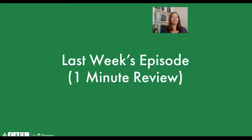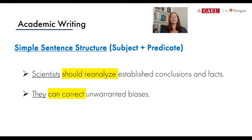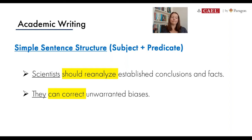Just before we get into the complex structure, I'd like to take a quick minute to review some of the structures we looked at last week, so it's fresh in our mind, because we'll be adding on with some new steps today. We already discussed what a simple sentence requires — every sentence has to have a subject and a predicate. The subject is who or what the sentence is about; in these two simple sentences, 'scientists' and 'they' form the subject, underlined here. The predicate is the rest of the words that tell you what the subject is doing, and it always includes a completed verb — highlighted in yellow. 'Should reanalyze' and 'can correct' are the two verbs, giving us two complete simple sentences.